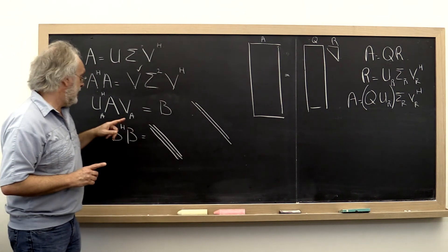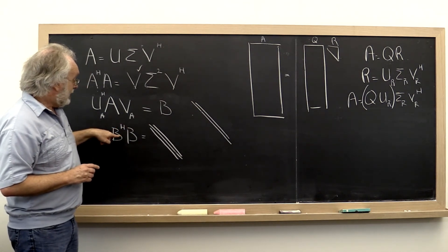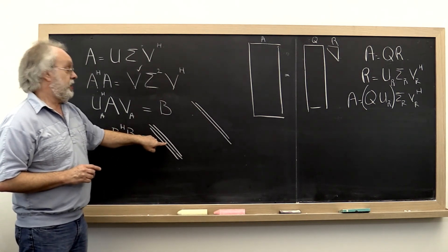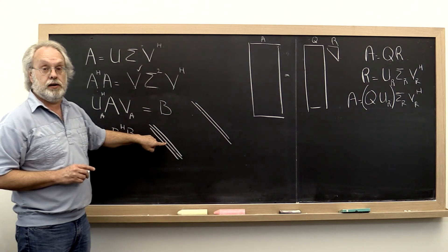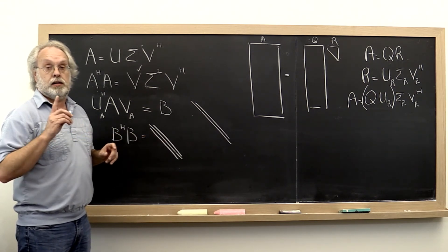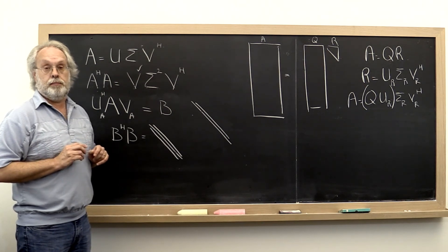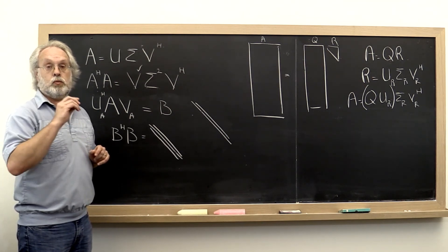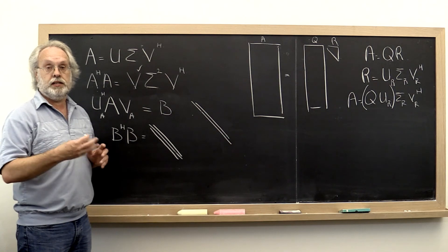And the key insight is that there is this relationship with a tridiagonal matrix. And the other key insight is our friend, the implicit Q-theorem. And that's what we are going to exploit in the next unit.